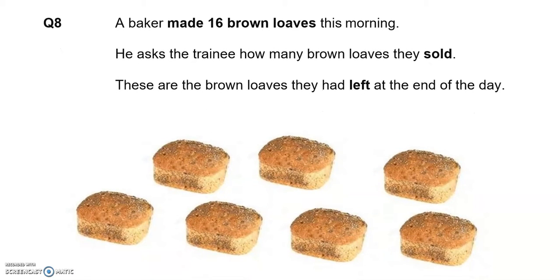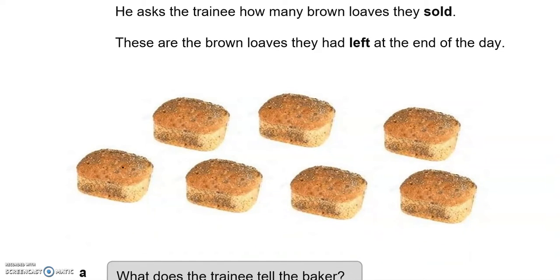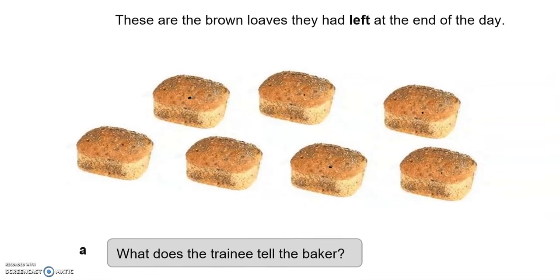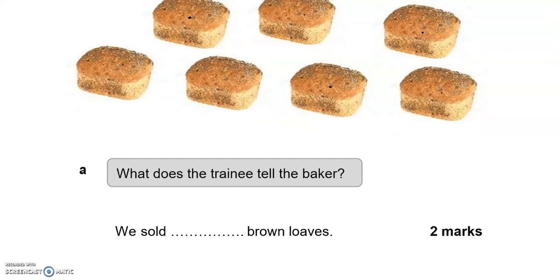A baker made 16 brown loaves this morning. He asked the trainee how many brown loaves they sold. These are the brown loaves that they had left at the end of the day: 1, 2, 3, 4, 5, 6, 7. 7 were left at the end of the day. 16 were made and 7 are left, so 16 take away 7 gives us 9. So they sold 9.